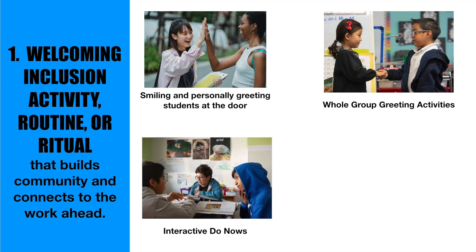Interactive do-nows involve students completing your typical do-now questions, but after individual quiet work time, you give them one minute where they can ask their peers questions. Or students identify questions they have about the homework, ask their peers for help, and then their group. Each group then identifies their top one to three specific questions or takeaways that the teacher can review.